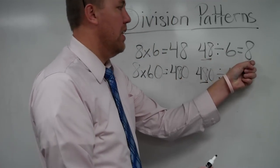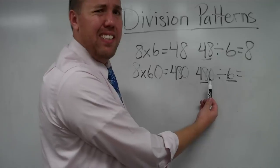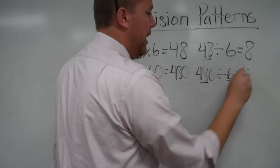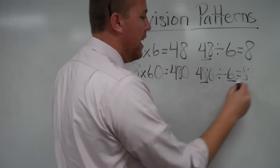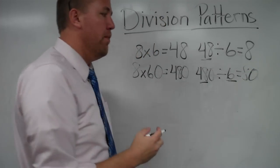Well, 48 divided by 6 is 8. I added a 0 into 48. So 48 divided by 6 is 8, 480 divided by 6 is 80.